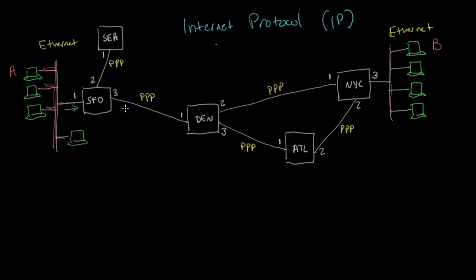And so if it decides to forward the packet out interface three, then it will encapsulate that IP packet inside a PPP frame and send it on to the next router over here.